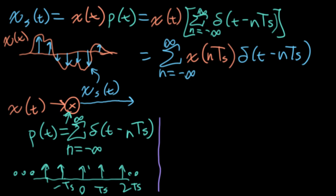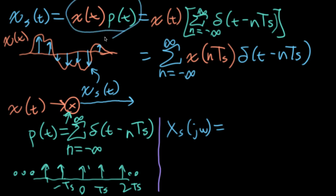So let's think about what XS of j omega looks like in the Fourier domain. We're multiplying in time, so that corresponds to convolving in the frequency domain. But I need to remember to put that little 1 over 2π out in front for this version of the property.